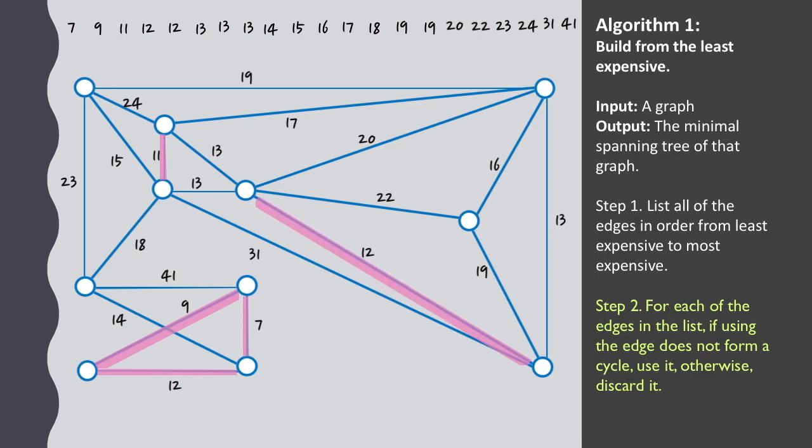Once we consider this edge, we can see that it forms a loop, and so it won't be required in the final tree. We can hence discard it and continue on.